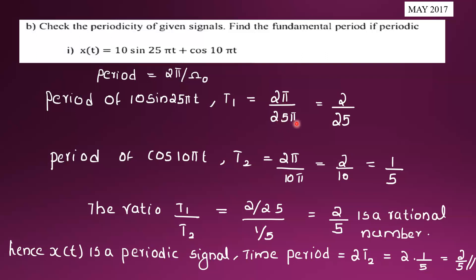The period T1 = 2π / 25π = 2/25, and T2 = 2π / 10π = 1/5. The ratio T1/T2 = (2/25) / (1/5) = 2/5. Since the ratio is rational, the signal is periodic with fundamental period T = 2/5.